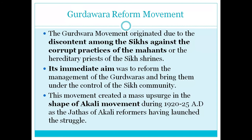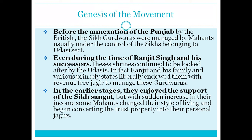To summarize part one: The Gurdwara Reform Movement started against the corrupt practices of the Mahants, as the Sikhs were greatly discontented with their practices. The immediate aim was that the management of the Gurdwaras should be given to the Sikh community. This movement is also sometimes called the Akali Movement. The Gurdwaras were managed by Mahants during both the time of Ranjit Singh and after the British annexation of Punjab in 1849. Initially they had the support of the Sikh Sangat, but when they started converting the Gurdwaras into personal jagirs, a problem arose.